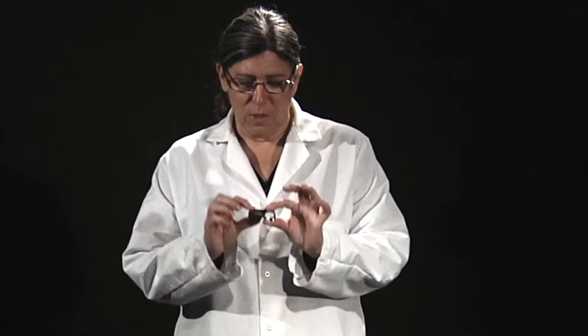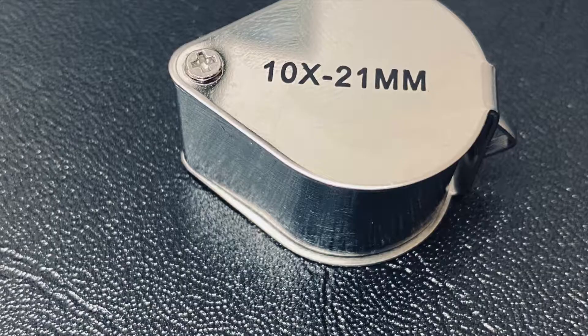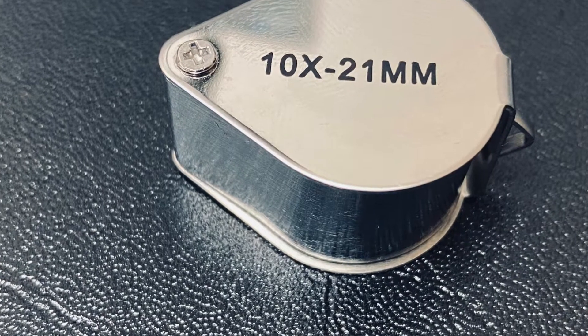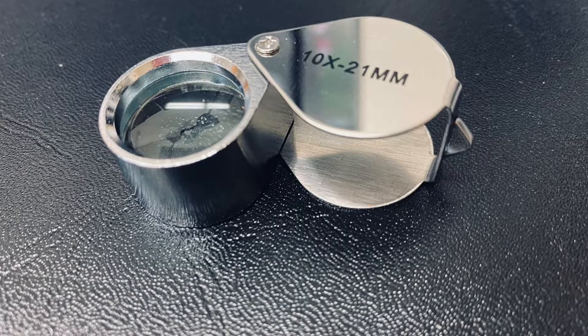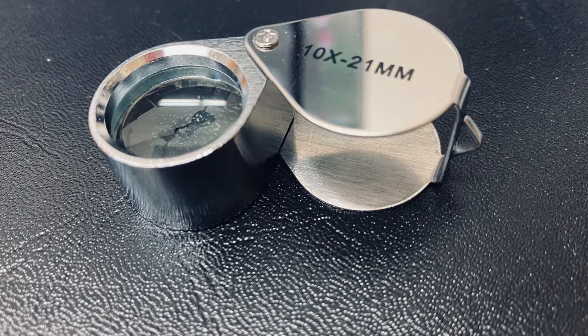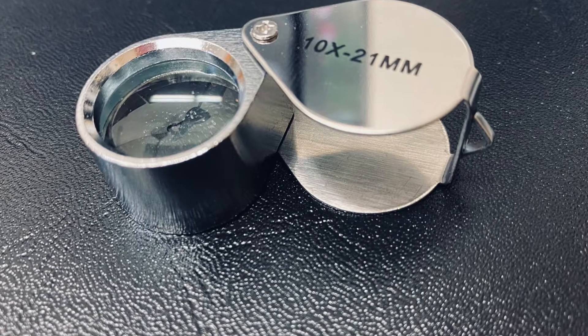So this is what the jeweler's loop looks like. When it's put away properly it looks like this little teardrop shape and when you want to open it up you just slide that open and you have the loop. The loop is L-O-U-P-E but it's just a magnifying glass.